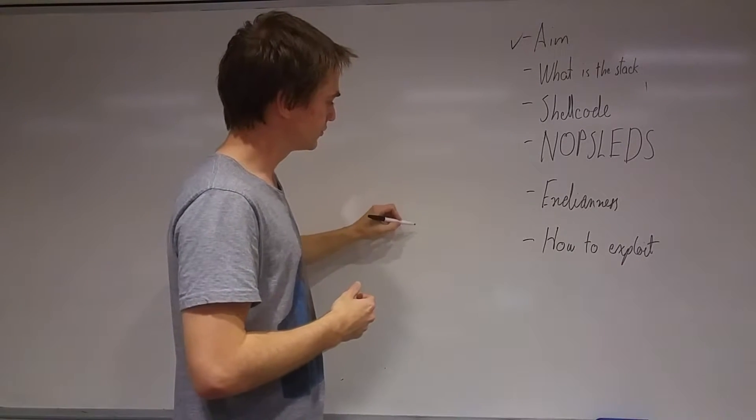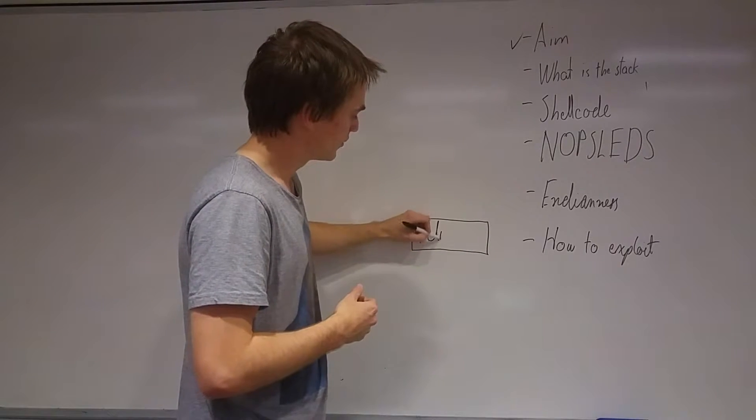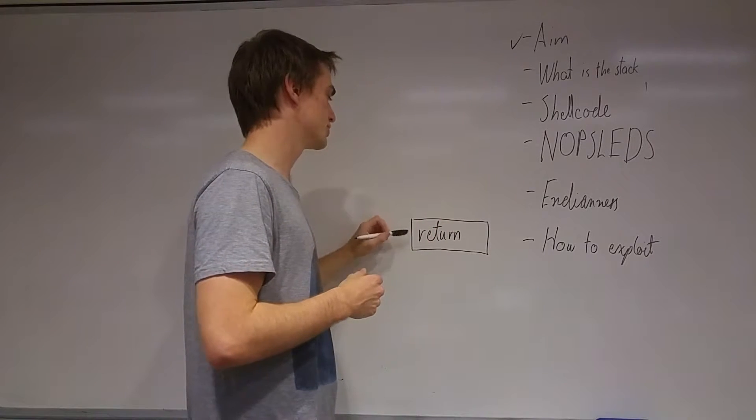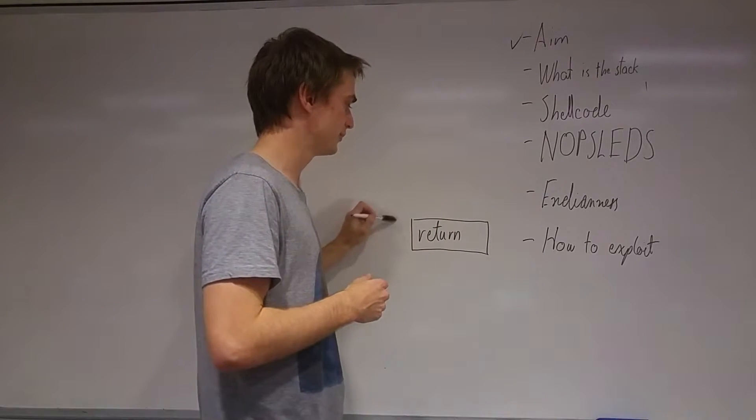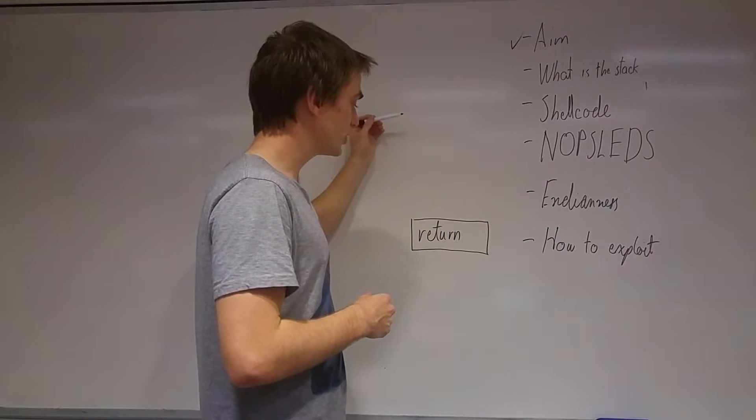Typically when we go into a function, what we store is the return address, which is when this program exits it knows where to return to in the code. This is very important. It returns a bit of information on the stack.